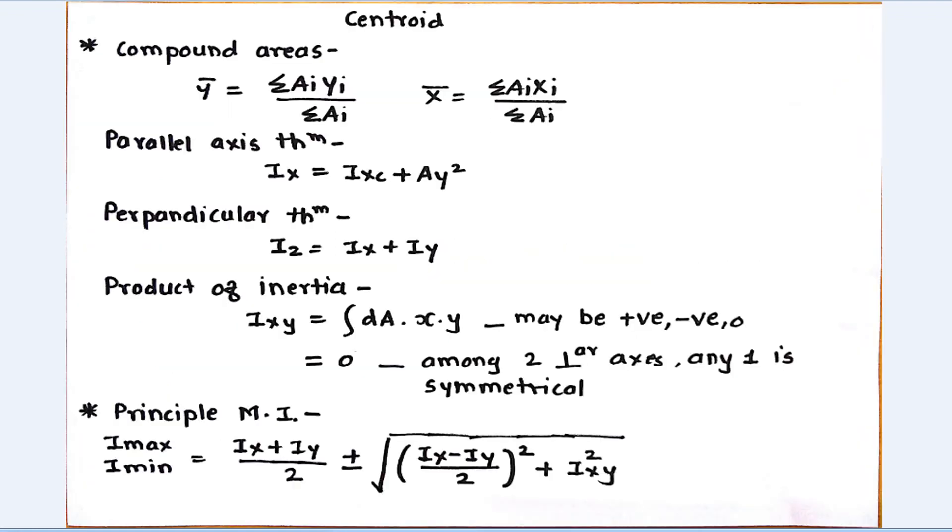The third chapter is centroid. The first thing in centroid is compound areas. Y-bar equals summation of A into YI divided by summation of AI. X-bar equals summation of AI into XI divided by summation of AI.